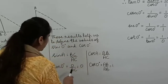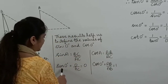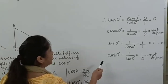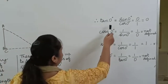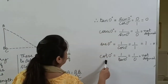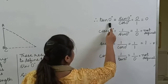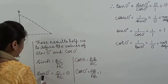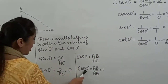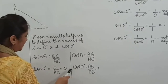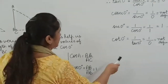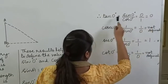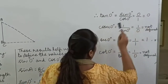Now that we have the values of sine 0 degrees and cos 0 degrees, it's easy to find the other trigonometric ratios of 0 degrees. Tan 0 degrees equals sine 0 degrees over cos 0 degrees, which is 0 by 1, which is 0. So tan 0 degrees is equal to 0.